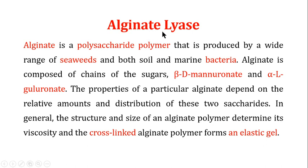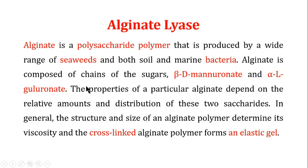However, DNA is not the only problem. Another important component of the thick mucus is alginate secreted by living bacteria, so the next enzyme we discuss is alginate lyase. Alginate is a polysaccharide polymer produced by a wide range of seaweeds and both soil and marine bacteria. It is composed of chains of two sugars: beta-D-manuronate and alpha-L-guluronate, which make up the alginate of both seaweeds and bacteria.